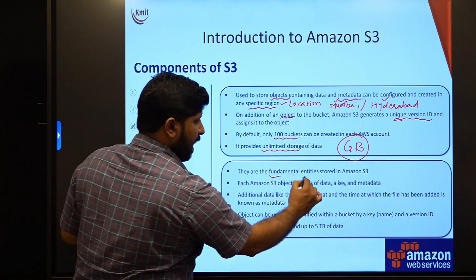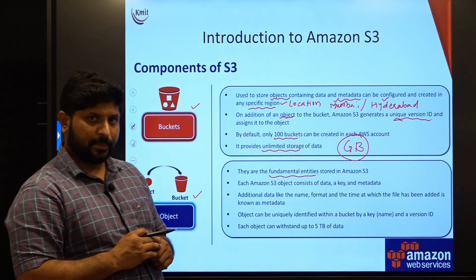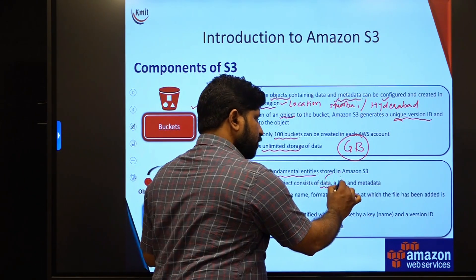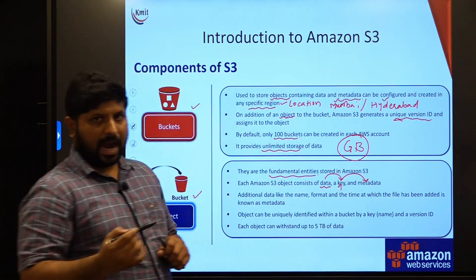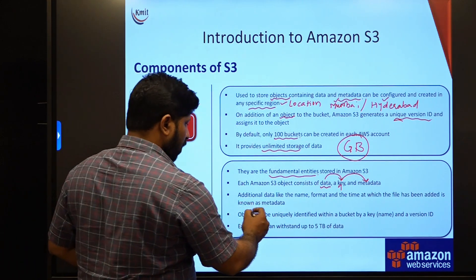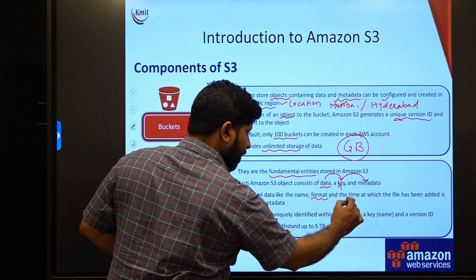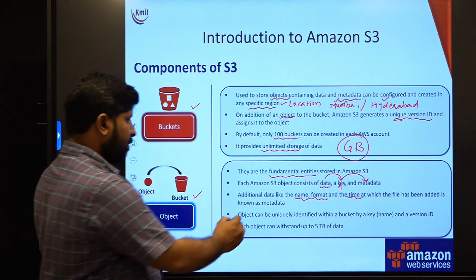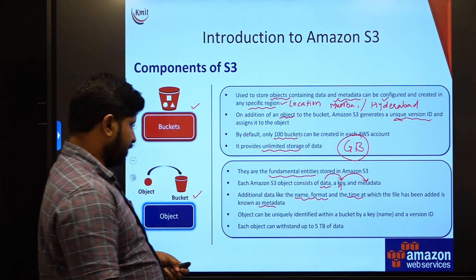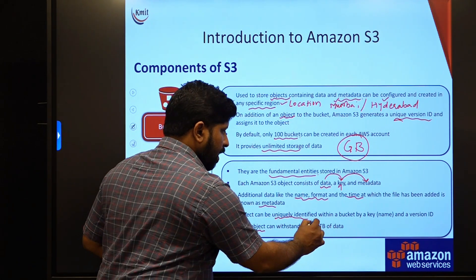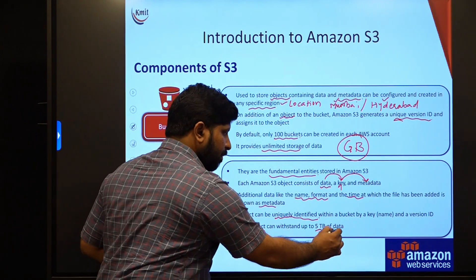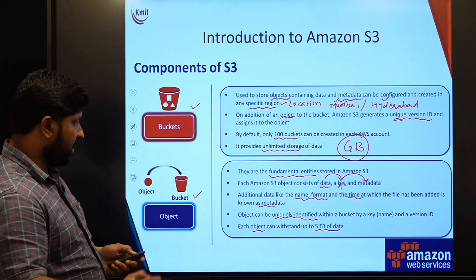Coming to objects, it is a fundamental entity in entire Amazon S3. Object is treated as a file and this object consists of the actual data which you want to store. This data is associated with a key and metadata. Key is nothing but a unique identifier with the metadata which we have discussed in our previous slide. Additionally, these objects are going to have format and time and the name of the object, everything in the metadata itself. Not only the key and metadata, in metadata we will have name, format, time and extra things. Each object is being accessed using a unique identifier. At the same time, each object must not exceed 5 terabytes of size. A file cannot exceed 5 terabytes.